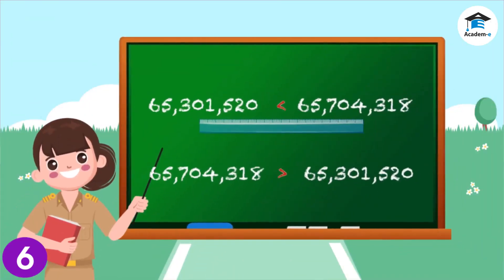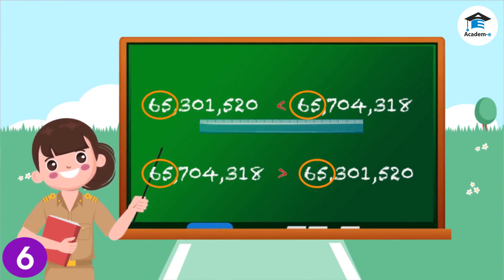Let's look at this next example. The first two digits are the same. Therefore, you'll have to compare the next digits, in the hundred-thousands place.